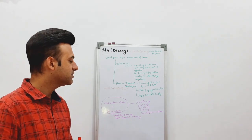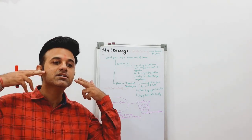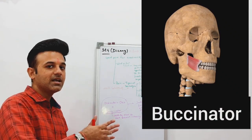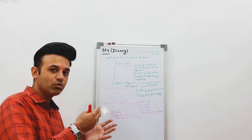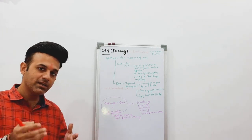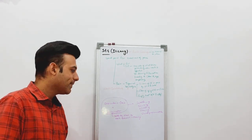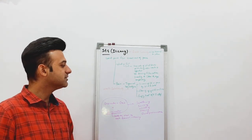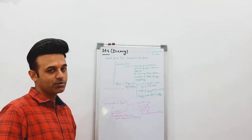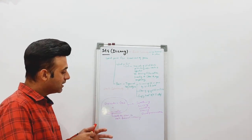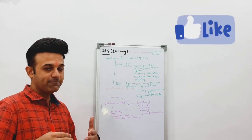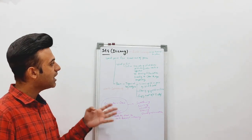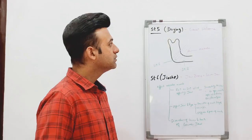The muscle on which Stomach 4 is located is the orbicularis oris, which surrounds the lips. The other muscle it acts on is the buccinator, which holds the cheek against the teeth while chewing. Together, both these muscles help in swelling, sucking, whistling, chewing and oral pronunciation. Due to its effect on these two muscles, you can clearly see how important this point is.